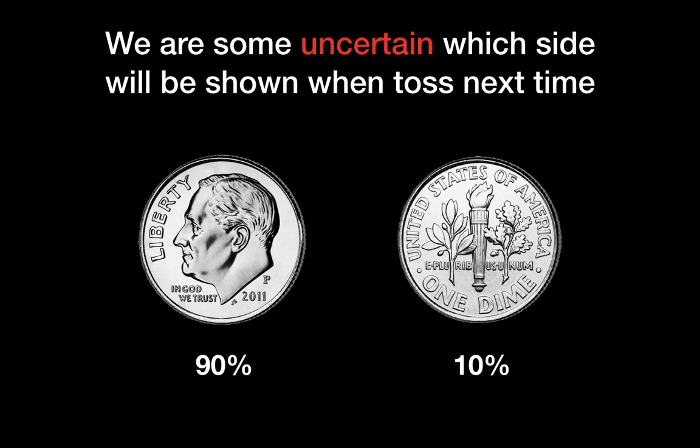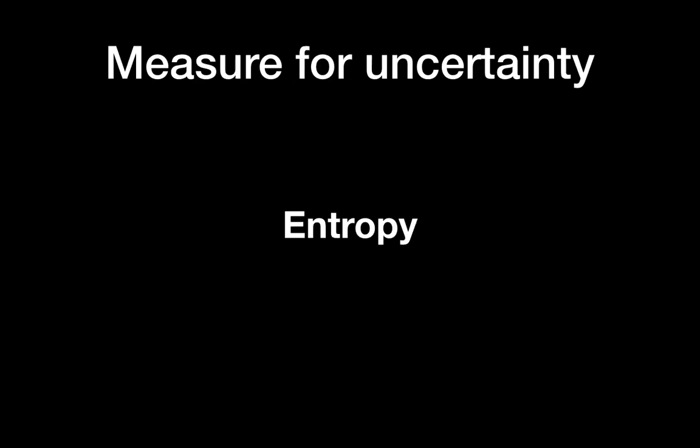So intuitively, you know that the first example has the highest uncertainty. The second example has the least uncertainty because we are so sure it will be the human face. And the third example, we have some uncertainty. How can we measure this? How can we show just one number representing the amount of uncertainty? That is the entropy.